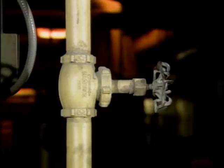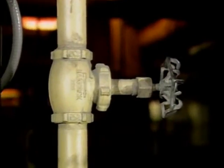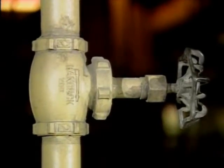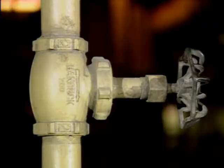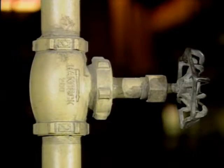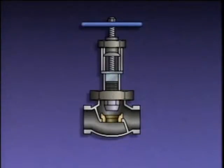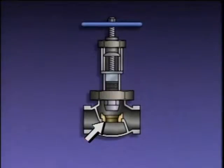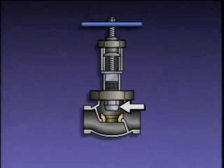Another type of valve commonly used in process systems is the globe valve. A globe valve can be used as an on-off valve to isolate components and as a throttling valve to regulate fluid flow. A globe valve consists of a globe-shaped valve body, a seating area or seat, a bonnet, a disc, and a stem with a handwheel attached to it.